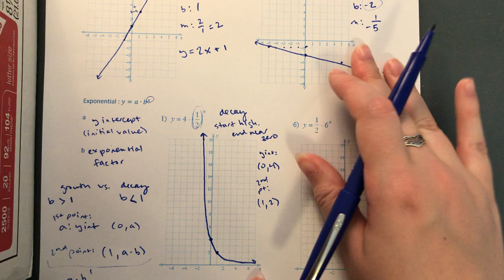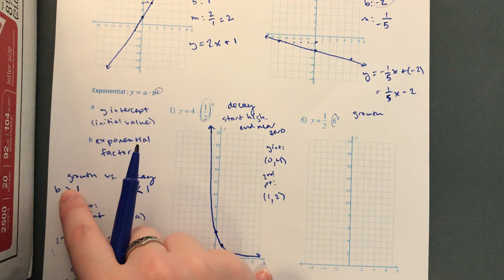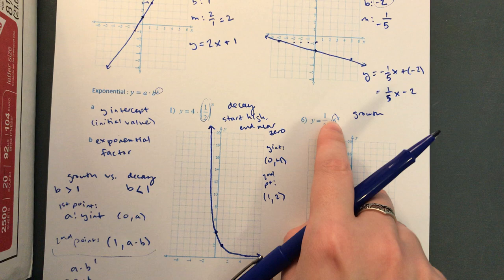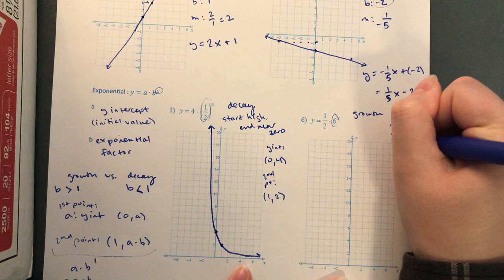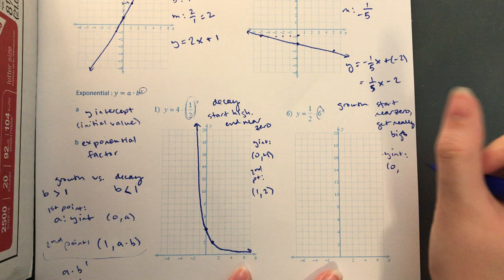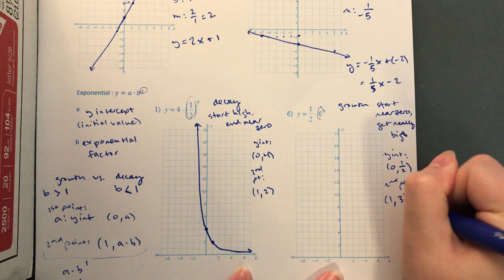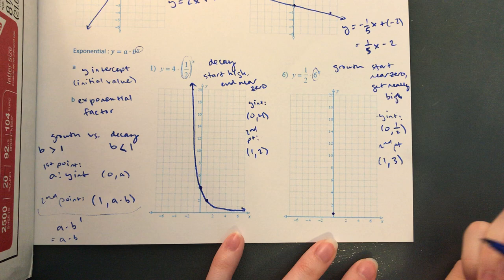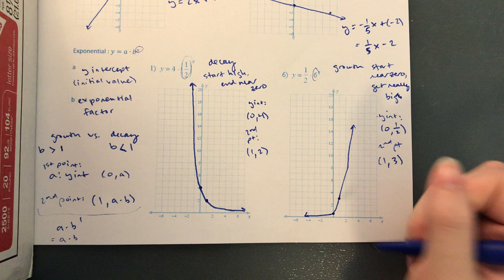For this next example, remember your b value is the one with the exponent — so our b value is 6. That means it's growth, because the b value is bigger than one. Remember, the b value is not the first one — that's your a value. So it's growing, meaning it starts near zero and gets really big. Your y-intercept point is (0, one-half) because a is one-half. Your second point is (1, a times b) — one-half times 6 is 3 — so (1, 3). We start near zero and get really big really quickly.